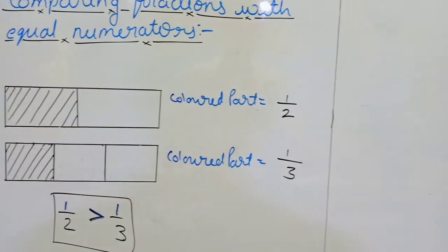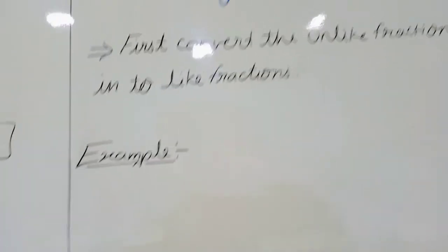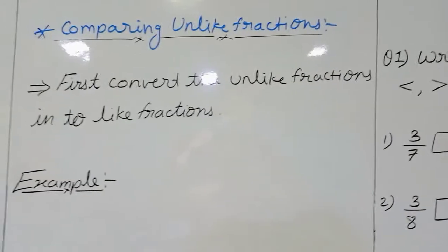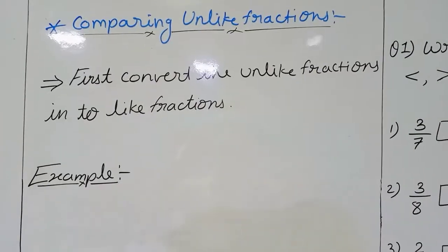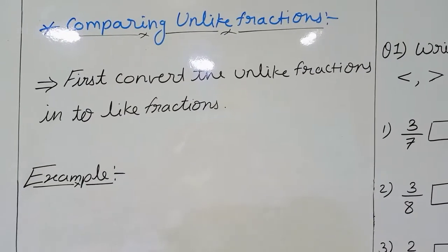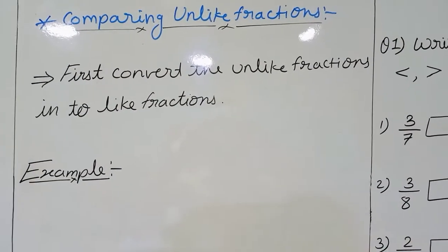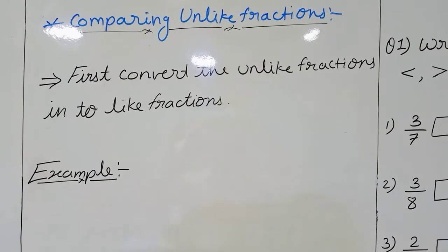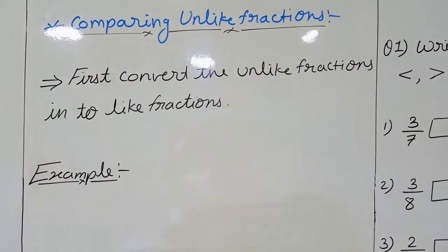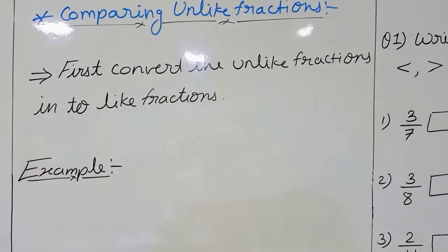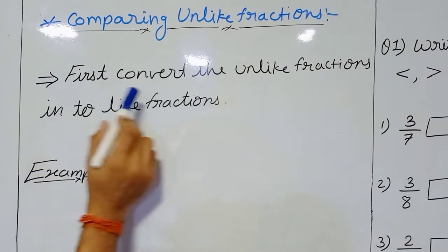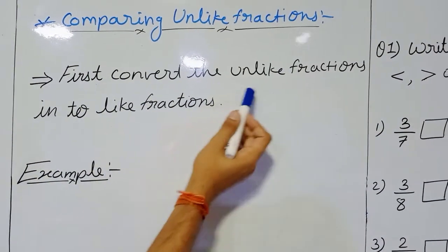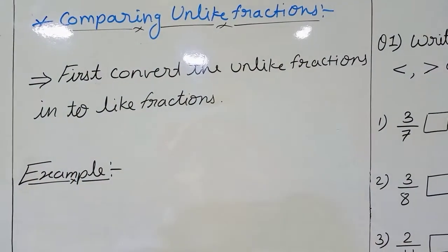Now, come to the third type of comparison: comparing unlike fractions. Unlike fractions are fractions that do not have equal denominators — in other words, they have different denominators. The most important step is given first: convert the unlike fractions into like fractions.